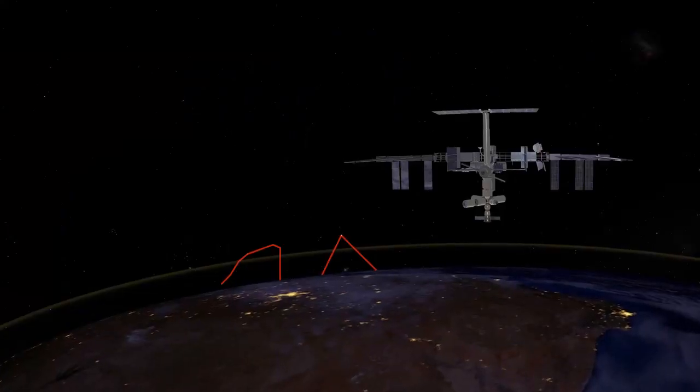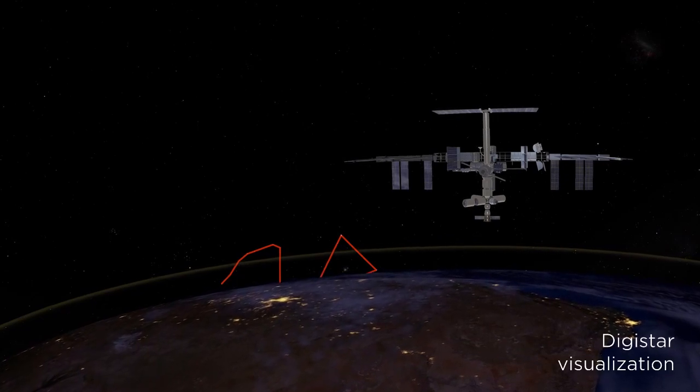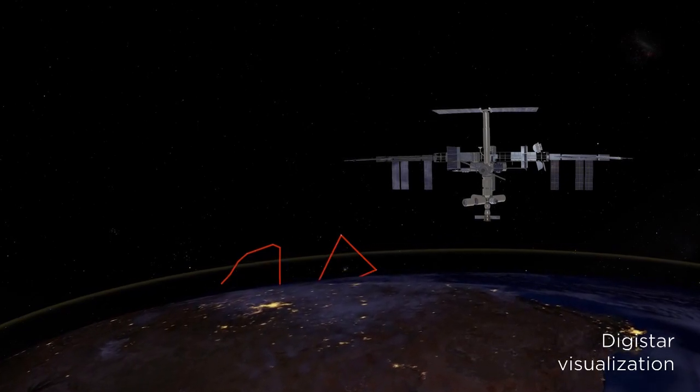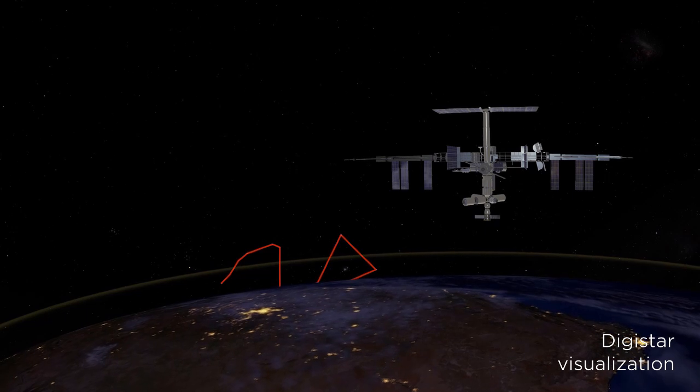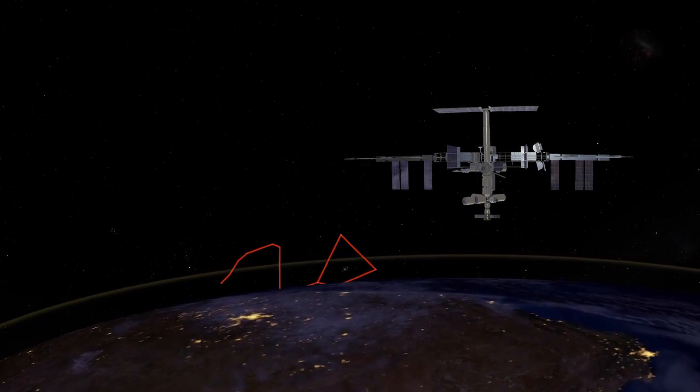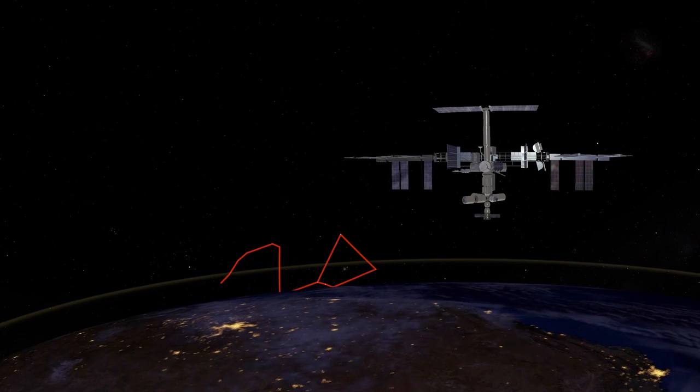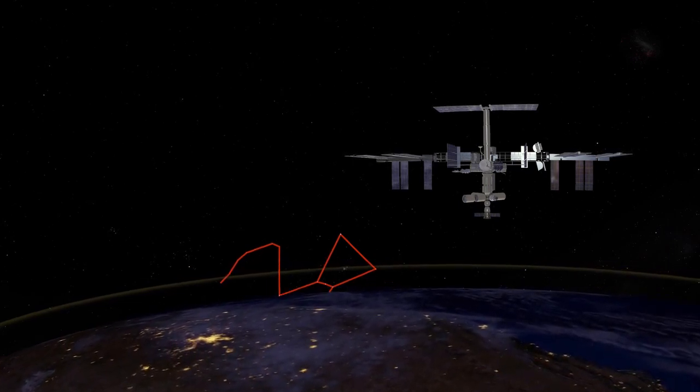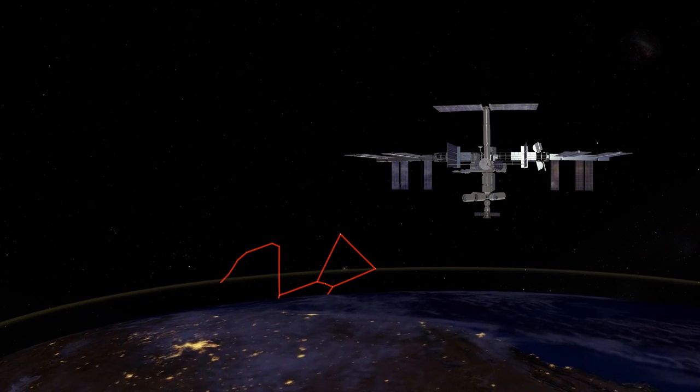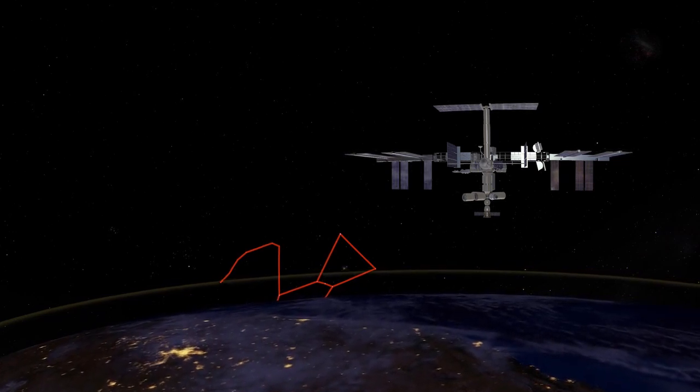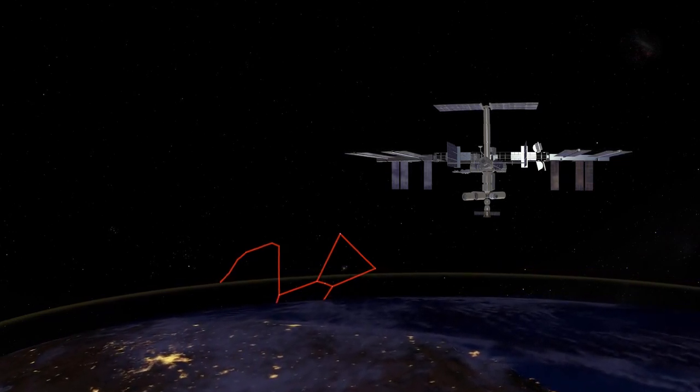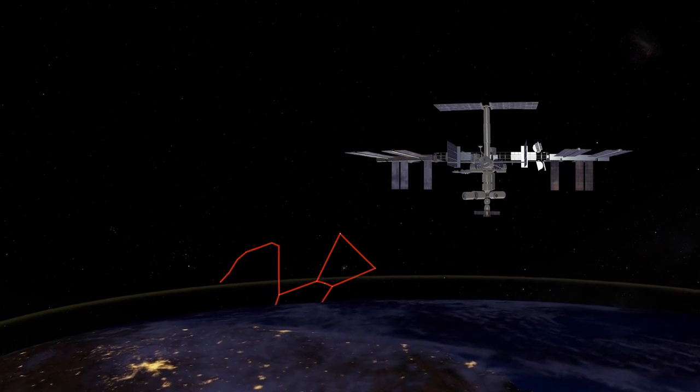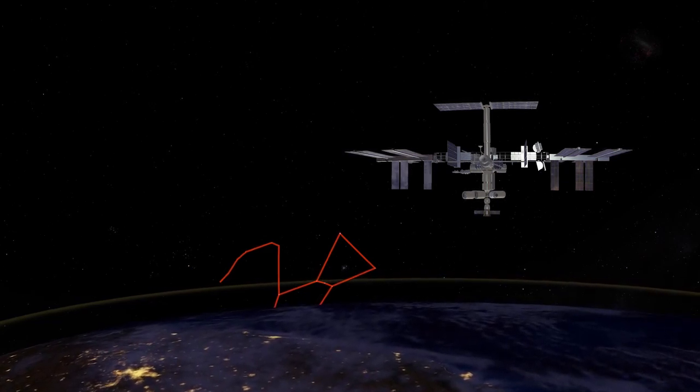At least at this time of year. And our planetarium software, Evans and Sutherland Digistar, showing more or less the same situation. Riding alongside the space station, just as it comes over the hill, so to speak, to see Orion's stars coming up. The constellation is upside down, and there are those three belt stars rising almost flat with the horizon.